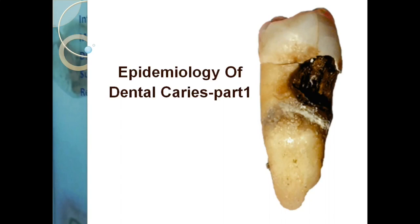Hello everyone, welcome back to a new session on Dentistry and All. Today we have epidemiology of dental caries. This will be in three parts: the first part is basic epidemiology and other details, the second part is epidemiology and dental caries — the historical or epidemiological studies which proved dental caries is connected to diet — and the third part is sugar substitutes. Let's see what the three factors of epidemiology are.